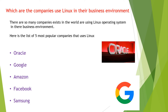The second one is Google. There is no explanation required for Google because it is the most popular company in this world. It is a part of the web and Linux is an operating system that makes the web work. The third name is Amazon. It is again a big company and it requires systems of higher performance, and this requirement is fulfilled by Linux.